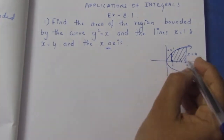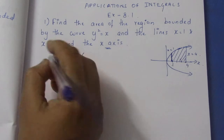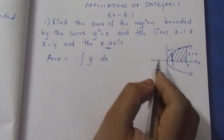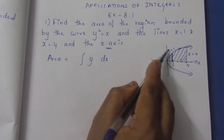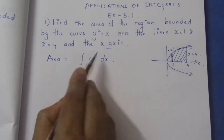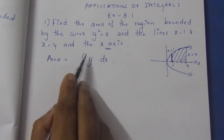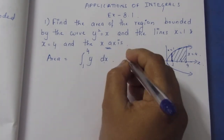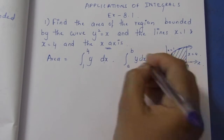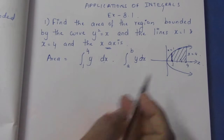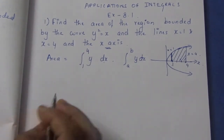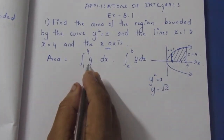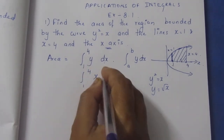The area is equal to integration of y dx. The area is the integral from a to b of y dx — the lower value is 1 and upper value is 4. Since y² equal to x, then y is equal to root x, so we integrate root x from 1 to 4 with respect to x.